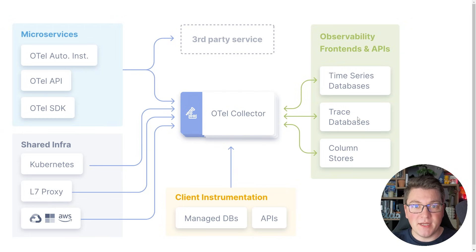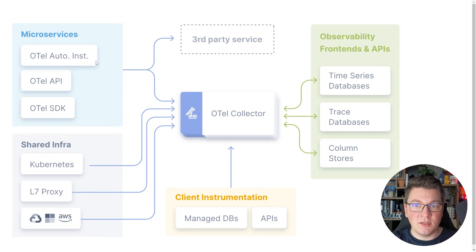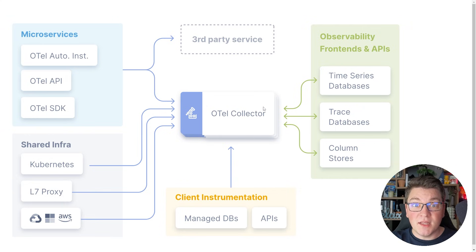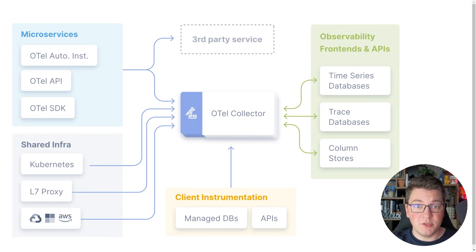OpenTelemetry is a standard for generating, collecting, and exporting your telemetry data such as metrics, traces, and logs. Here's a high-level overview of how this works. You have your individual services that are being instrumented using OpenTelemetry, and these services will be pushing telemetry data into a collector. The same also applies for your infrastructure components such as your proxies, your cloud components, and your managed services like databases and third-party APIs. Once you collect all of this data, you can plug in an observability frontend, which is typically some dashboard like Grafana or the Aspire dashboard, that is going to allow you to monitor your telemetry data and figure out what is the state of your system.